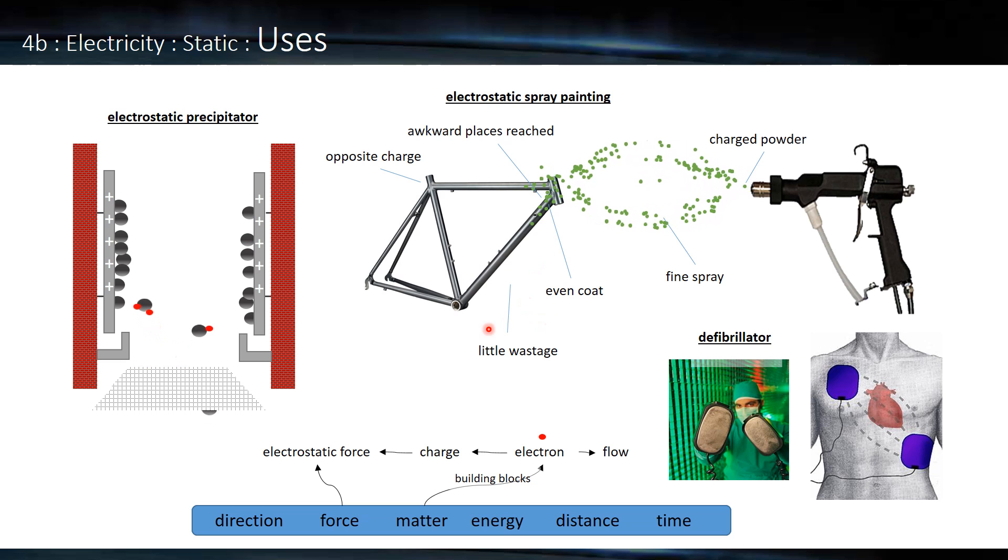Much less ends up on the ground, and also it ends up in very awkward places, even behind or out of sight of the gun. So they'll fly around and even if they overshoot, they'll be attracted back. So it's a very handy, money-saving device.